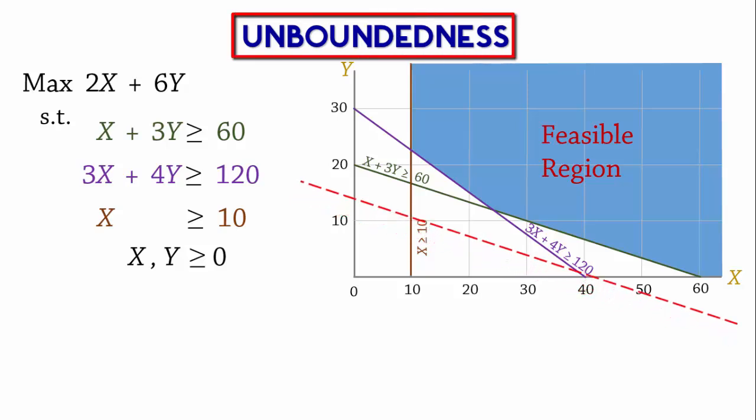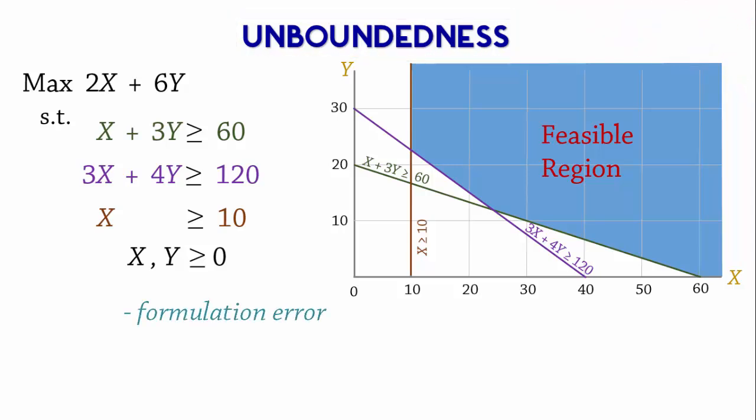It suggests that we can make unlimited profit, which is impractical. It is usually due to a formulation error or by assuming a resource could be unlimited in supply.